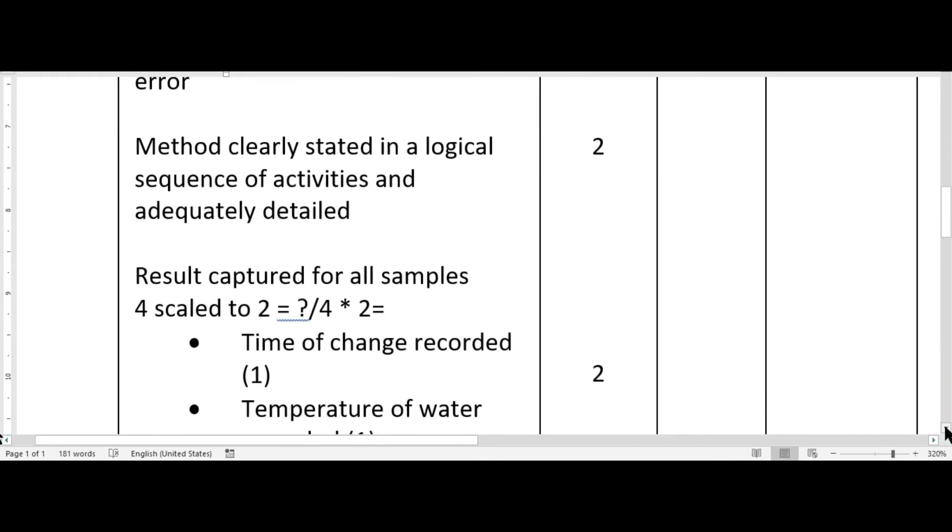Then we move on down to the result. Now the result captured are pretty much for all examples. That is very very important and here you're given one mark each and that will be scaled to two. Be mindful that CXC does not award half marks as such if it is 0.5 you will award a full mark to the student.